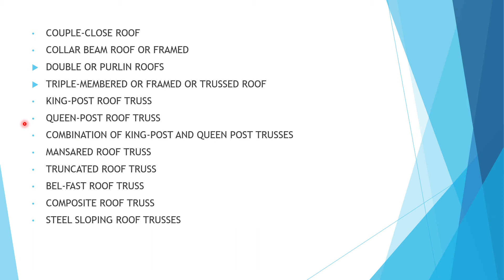The second type of truss is the queen post truss. Queen post trusses differ from king post trusses in having two vertical posts rather than one. The vertical posts are known as queen posts, the tops of which are connected by a horizontal piece known as the straining beam. Two struts are provided joining the feet of each queen post to the principal rafter, and the queen posts act as tension members.